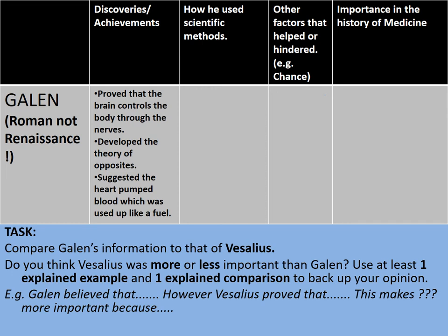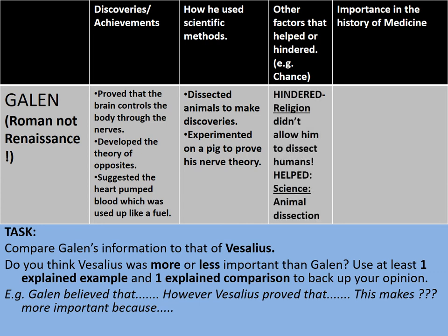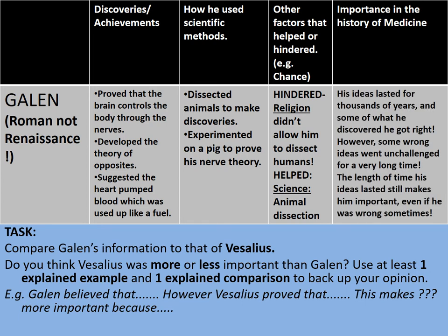To review Galen's information: he proved the brain controls the body through the nerves; developed the theory of opposites; suggested the heart pumped blood used up like a fuel. He dissected animals and experimented on a pig to prove his nerve theory. Religion didn't allow him to dissect humans, so he got some things wrong. His ideas lasted for thousands of years — some correct, some not — but the length of time his ideas lasted still makes him important, even when he was wrong.